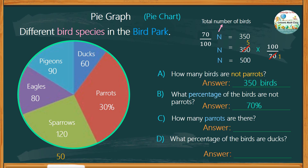It means there are 500 birds in total. And if we subtract the 350 birds that are not parrots, therefore the remaining 150 birds are parrots. Lastly, what percentage of the birds are ducks? To find the percentage, we identify the fraction and multiply it by 100. There are 60 ducks out of 500 birds total. We can cross out the zeros, leaving 60 divided by 5, which gives a quotient of 12, or 12%. So 12% of the birds are ducks.